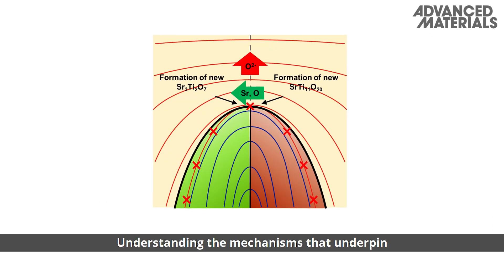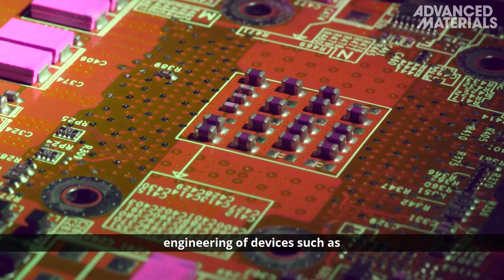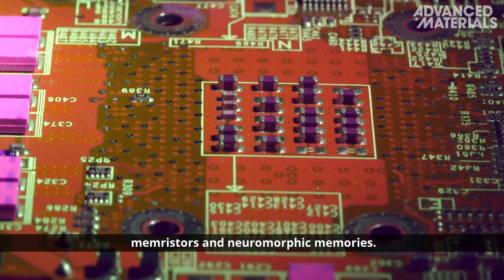Understanding the mechanisms that underpin resistive switching would enable greater control over the engineering of devices such as memristors and neuromorphic memories.